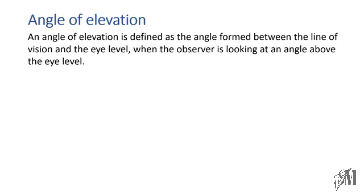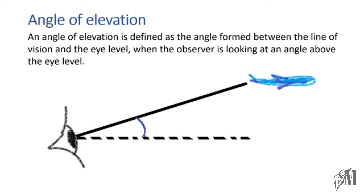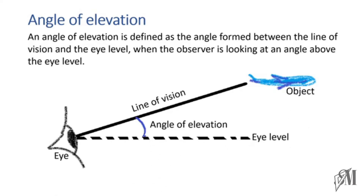An angle of elevation is defined as the angle formed between the line of vision and the eye level when the observer is looking at an angle above the eye level. When you see something above your eye level, this angle at which you turn your eye from the eye level to the object is called the angle of elevation. Here you have the eye level, the line of vision, and the angle of elevation.